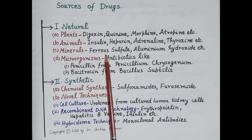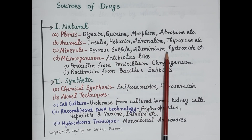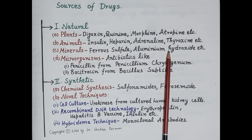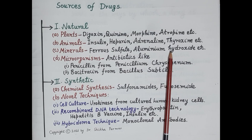For example, iron — that is, ferrous sulfate — is a mineral source. Ferrous sulfate is used in the treatment of iron deficiency anemia. Then aluminium hydroxide, which is also a mineral, is used for reducing the acidity of the stomach.